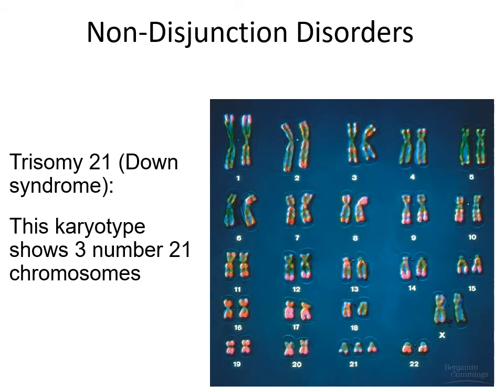Non-disjunction disorders we have seen include a number of different ones, but a more common one is trisomy 21, also known as Down syndrome. Here's a karyotype of an individual who has Down syndrome. We can see that the reason it's called trisomy 21 is because the 21st chromosome, instead of having two chromosomes — a homologous pair — actually has three of these chromosomes. So trisomy 21.